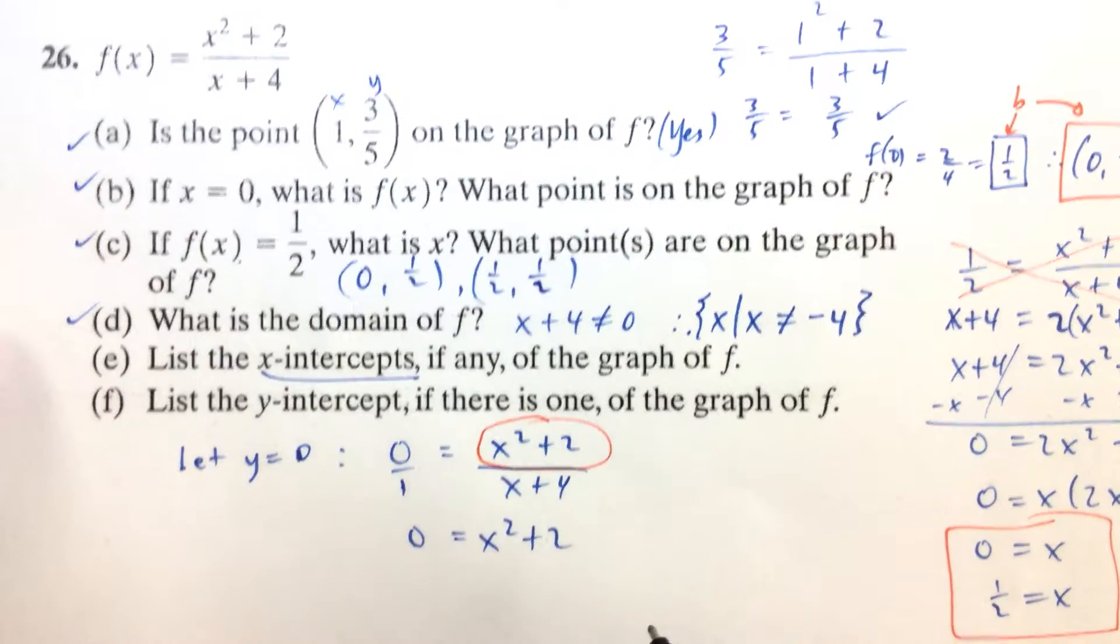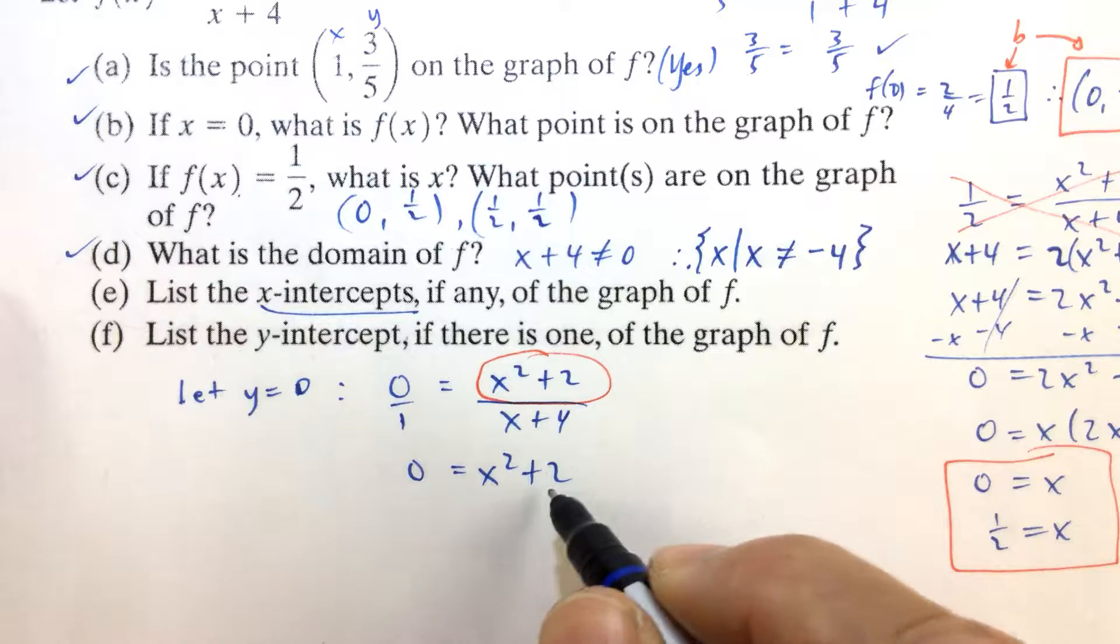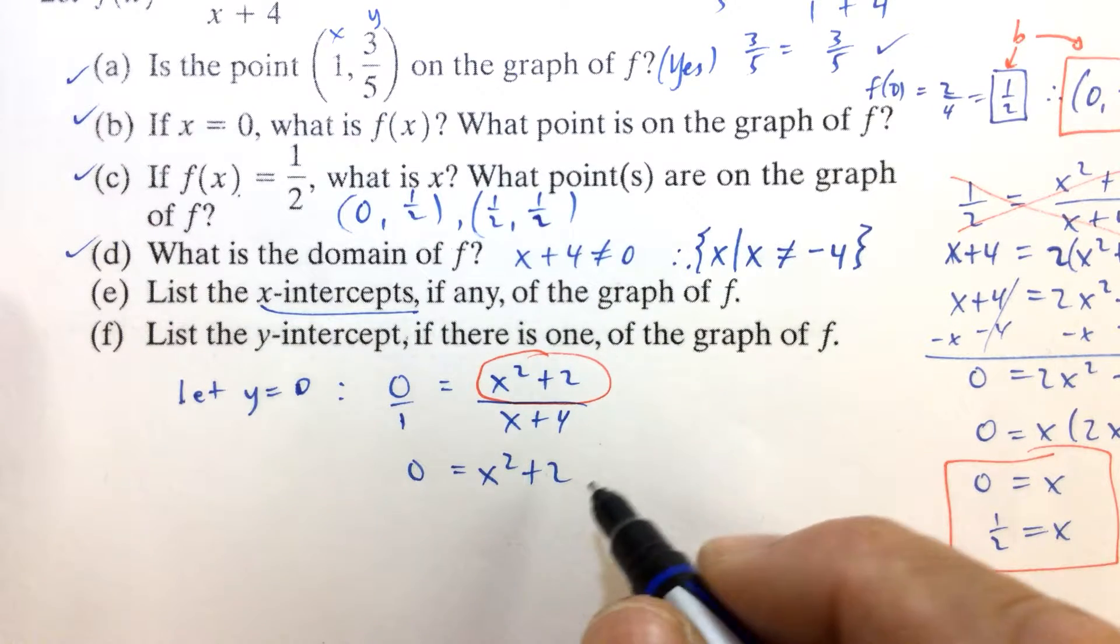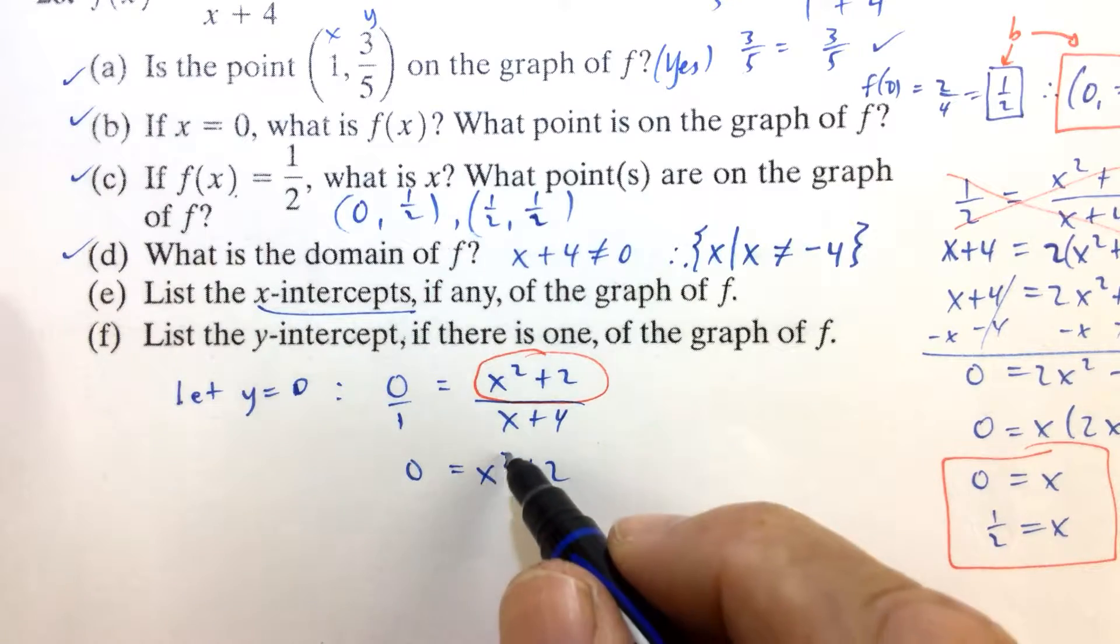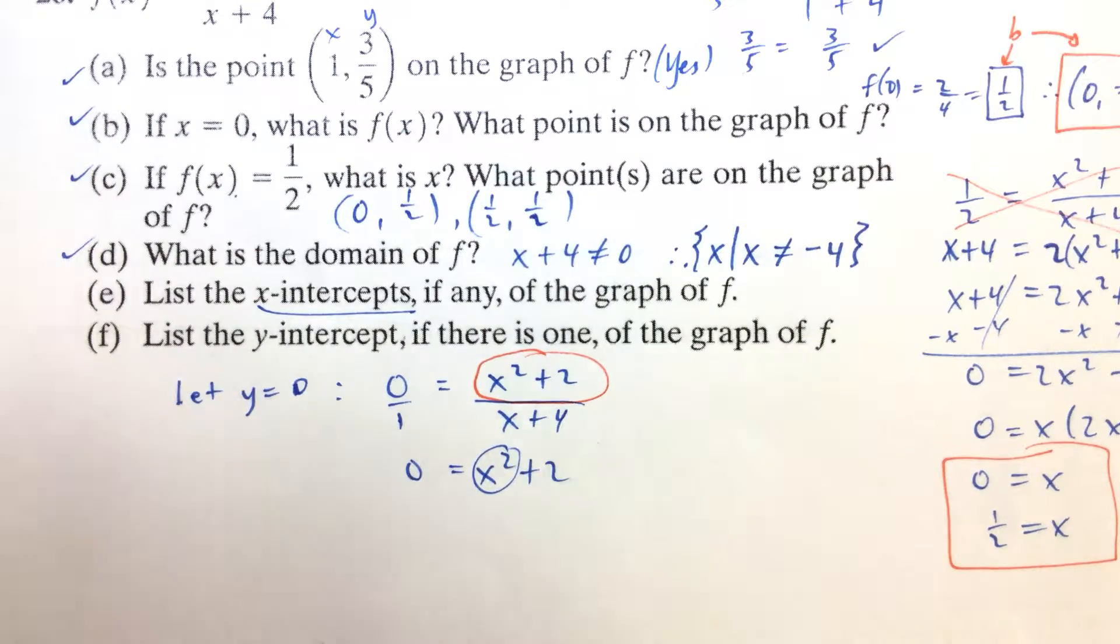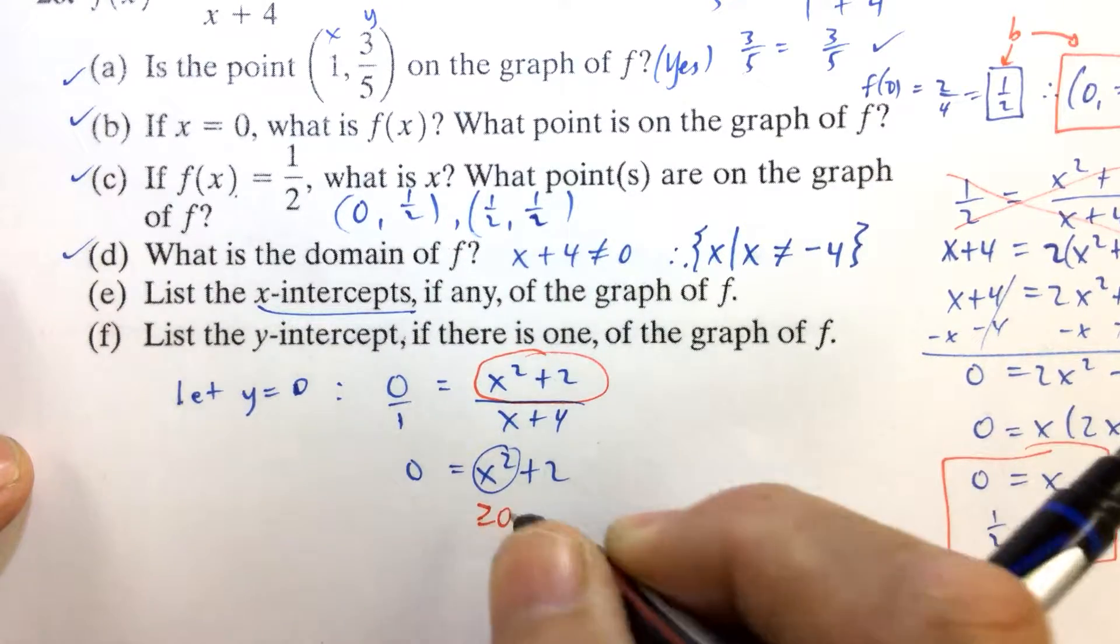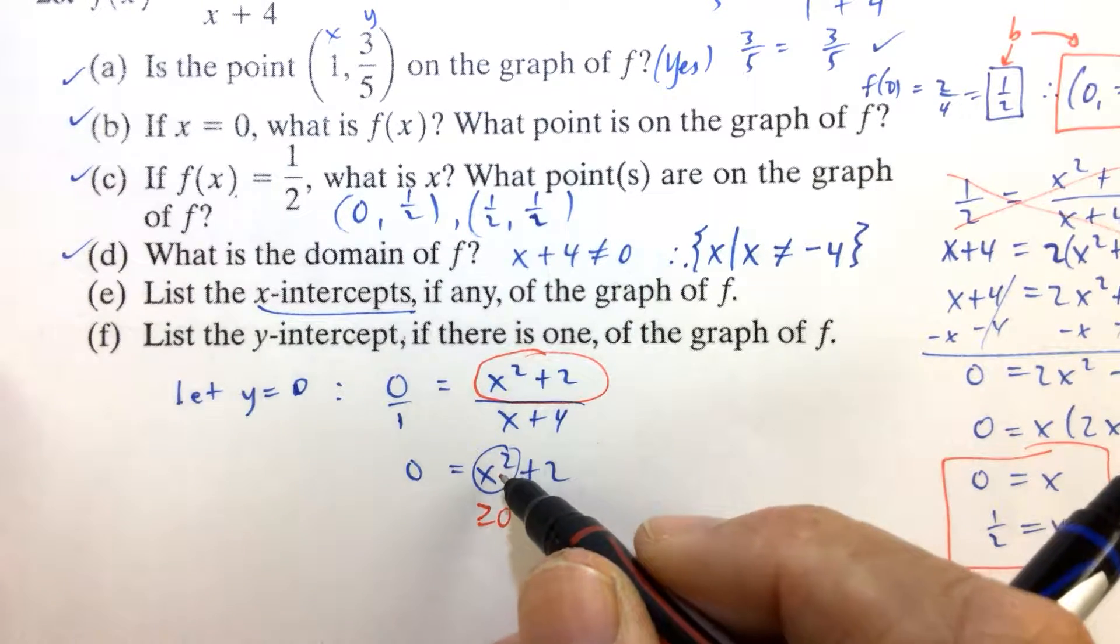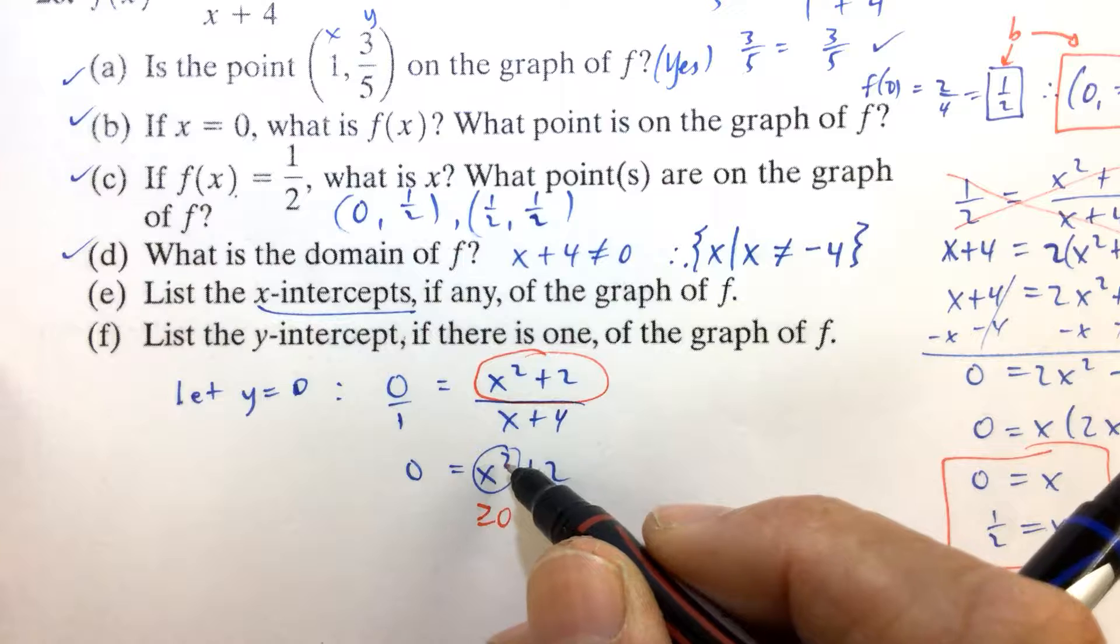So, now let's think about this. Can X squared plus 2 ever equal 0? Well, can it? No, it can't. Because when you square a number, that number has to be at least 0. So, if you put a 0 in there, then you get a 0. If you put any other number in there, you get a number bigger than 0.